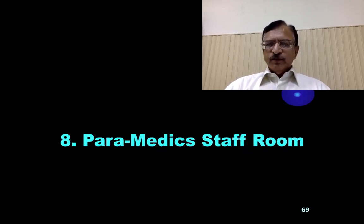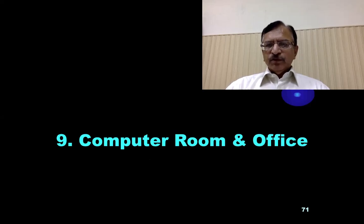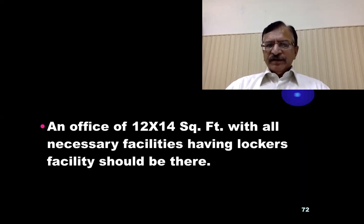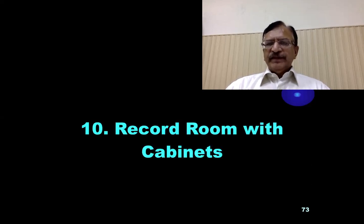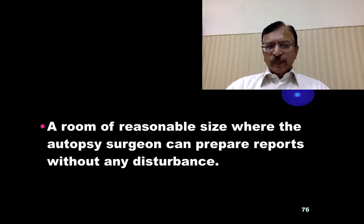Separate rooms of 12 x 14 square feet for male and female paramedic staff with locker facilities should be available. A computer room and office of 12 x 14 square feet with all necessary facilities including lockers should be provided. A record room with cabinets for maintenance of records and storage of case files should be there. Finally, a doctor's office — a room of reasonable size where the autopsy surgeon can prepare reports without any disturbance.